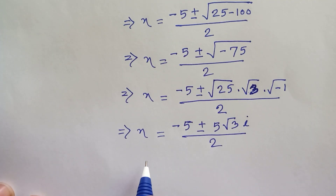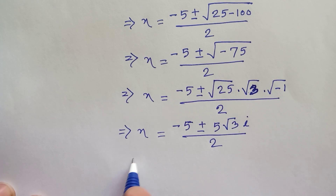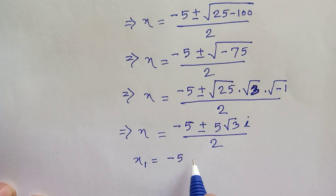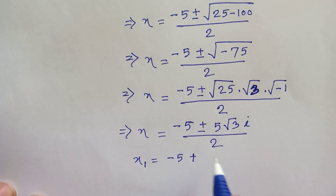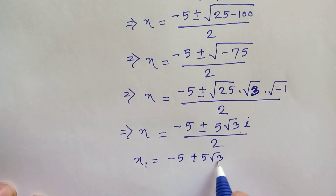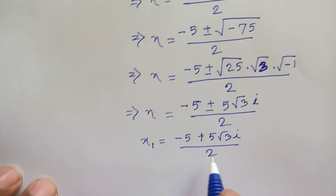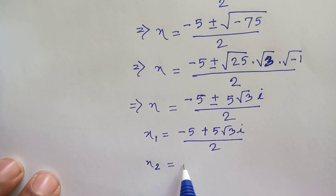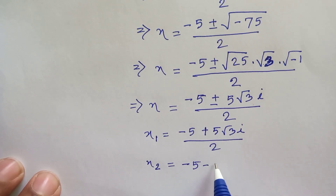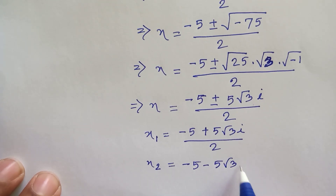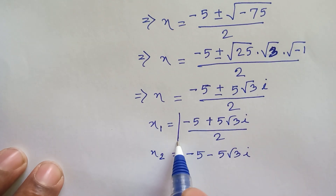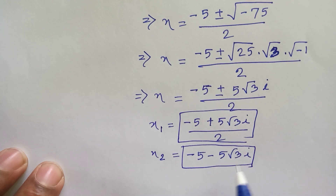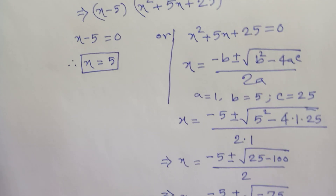So we have two complex solutions: x₁ equals (negative 5 plus 5i√3) over 2, and x₂ equals (negative 5 minus 5i√3) over 2. This is a very complex number, and our original real value of this equation is x equals 5.